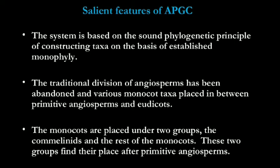The traditional division of angiosperms has been abandoned and various monocot taxa are placed in between primitive angiosperms and eudicots. The old systems like natural system and artificial system have been neglected and a new system has been classified. Thirdly, the monocots are placed under two groups — the commelinids and the rest of the monocots — and these two groups find their place after primitive angiosperms.